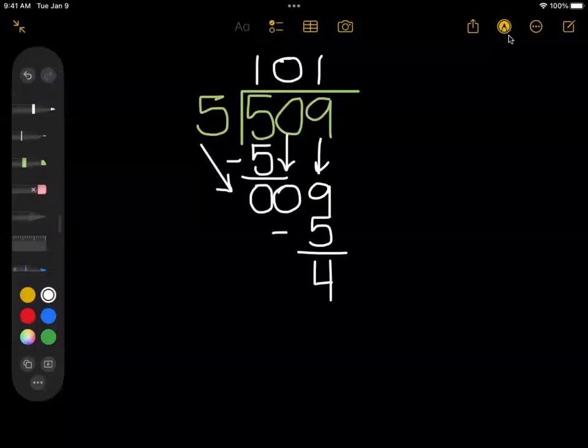Since we are no longer using remainders, we need to get a decimal answer. So here is where I would add a decimal and a zero, and a decimal into my answer space right above where it is in the problem, and then I would bring down this zero.